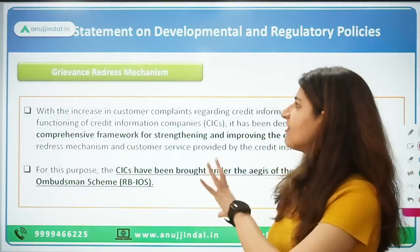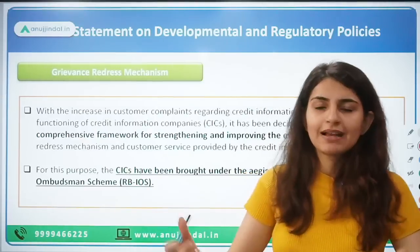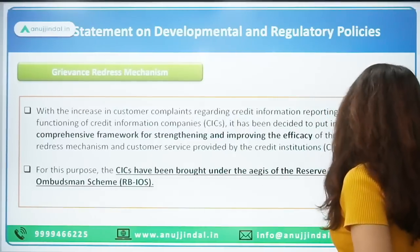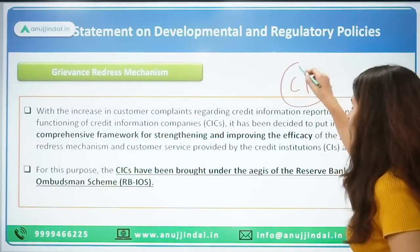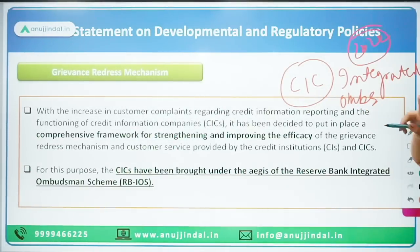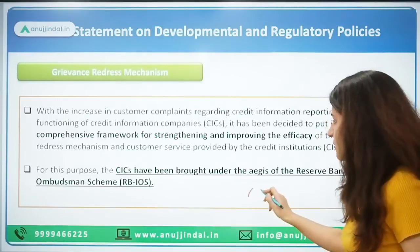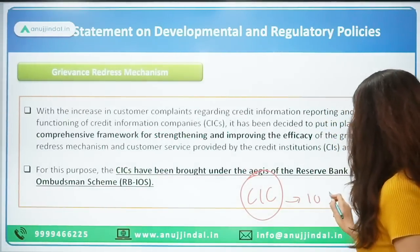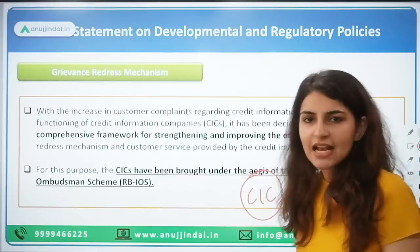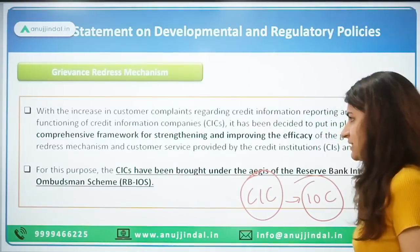The fourth topic is about a centralized grievance redressal mechanism. Already, a grievance redressal mechanism exists — the integrated ombudsman scheme — which became operational in 2021-22. Under this scheme, Credit Information Companies — CICs — were included along with NBFCs and digital and banking transactions. CICs were brought under the integrated ombudsman scheme.